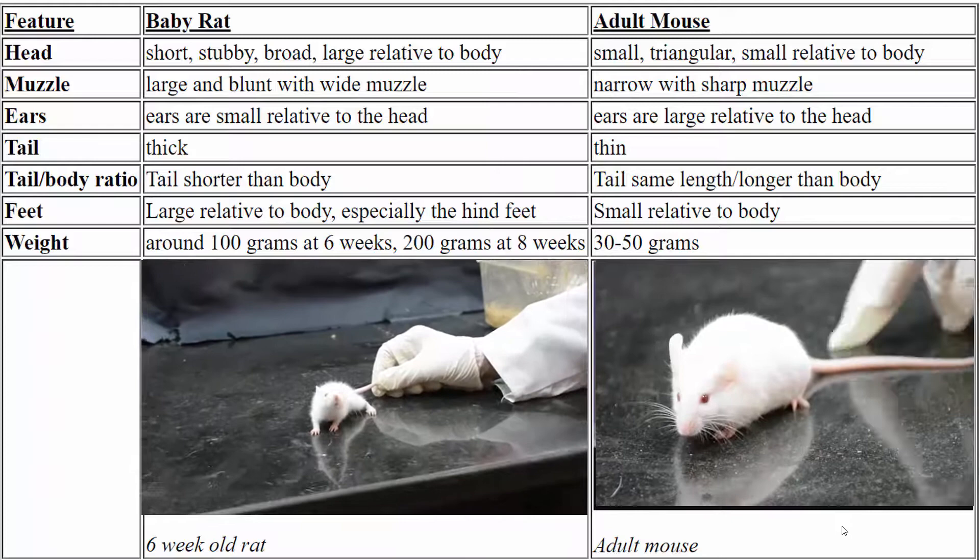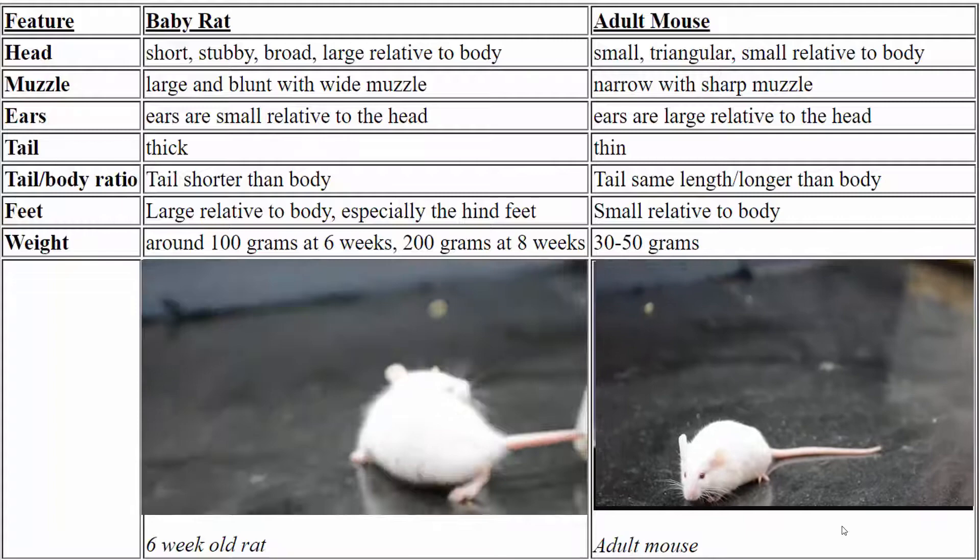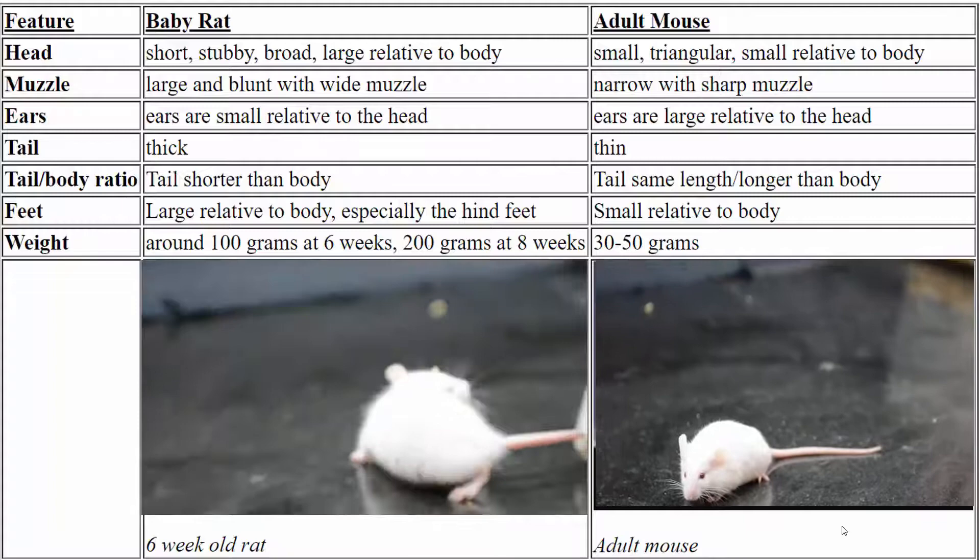Adult mice, on the other hand, will have adult proportions — a triangular head with a small narrow nose and small feet compared to the body. Additionally, mouse ears are very large relative to their heads, while rat ears are smaller. Rats also have a thick tail that is shorter than their body length.